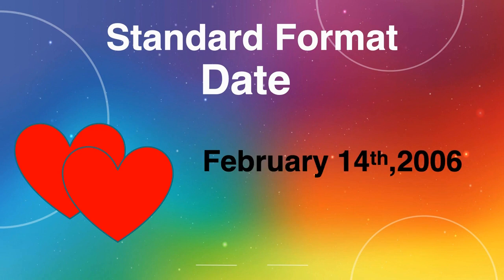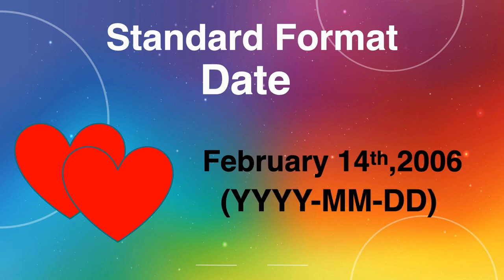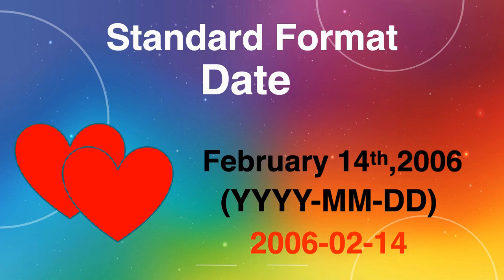Let's look at this holiday: February 14th, 2006. To write this date in standard format, we look at writing the year, then the month, then the day. So that means, if I were to take February 14th, 2006 and write it in standard format, or SI format, it should look like this: 2006-02, because February is the second month, hyphen 14, for the 14th date.